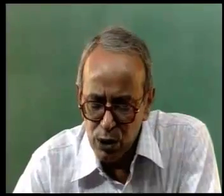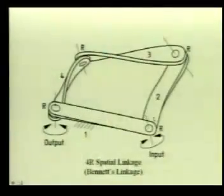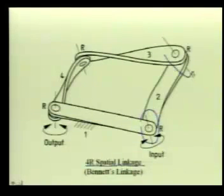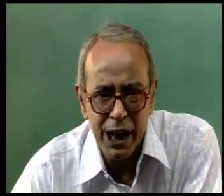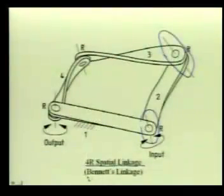This figure shows again a mechanism with four revolute joints but here we call it a 4R spatial linkage because the points of all these links move neither in parallel planes nor on the surfaces of spheres. They move in a three dimensional space and as can be clearly seen the axes of these revolute pairs are skewed in space in the sense they are neither intersecting nor parallel. This linkage has a name, it is called a Bennett's linkage.